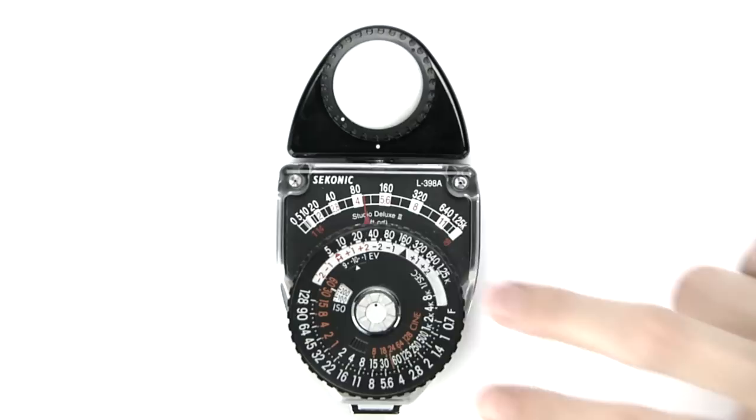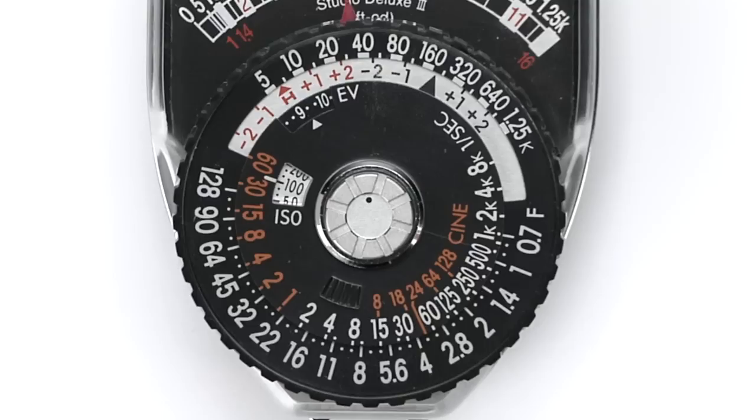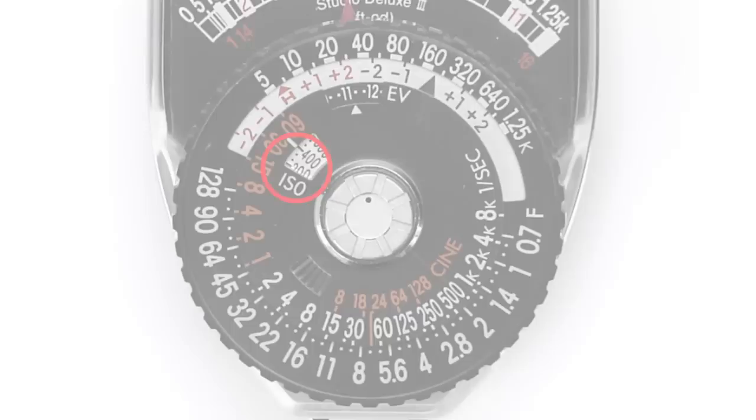To do an ambient light meter reading, first set the ISO. Let's use ISO 400. Set the ISO by placing your finger on the raised pattern near the silver stop button and moving the dial until you see 400 in the ISO window.